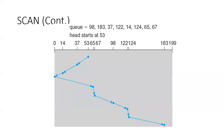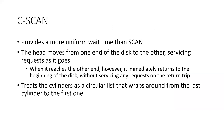In summary, SCAN first determines the direction based on the closest boundary, reads all sectors in that direction until it reaches the boundary, then reverses direction and reads all sectors going the other way up to the maximum sector number.